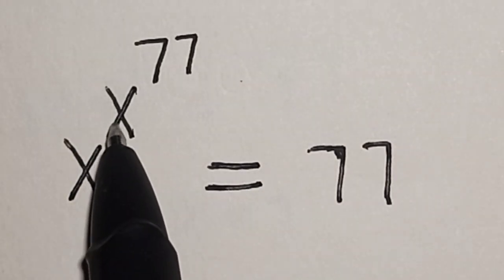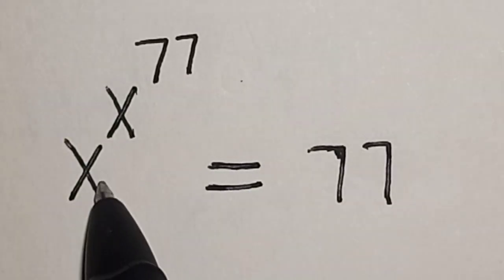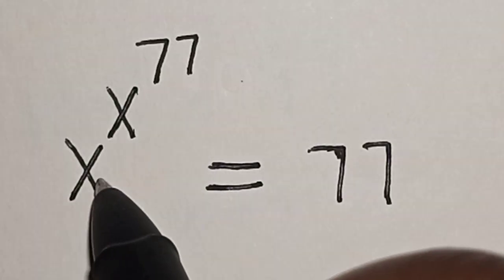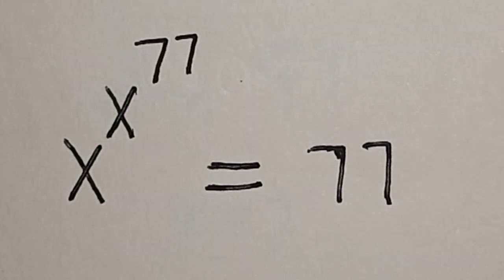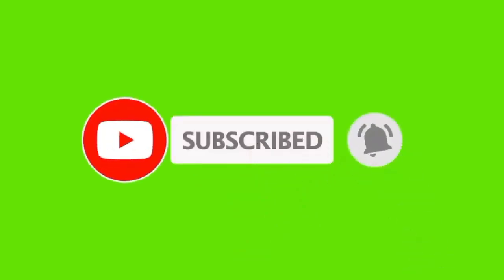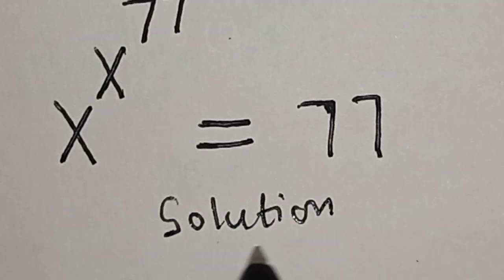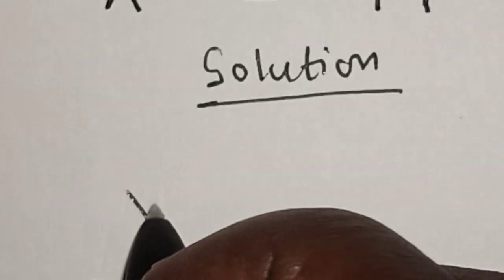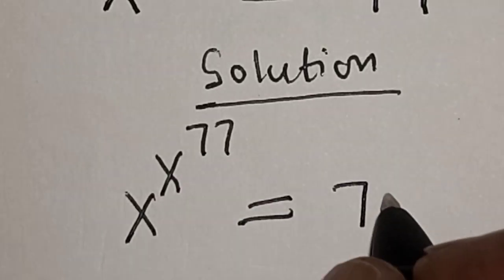x raised to power x raised to power 77 is equal to 77. Hi everyone, welcome to my class. In this class we want to find the value of x from this given equation: x raised to power x raised to power 77 is equal to 77.